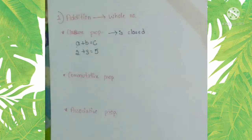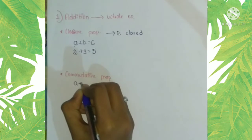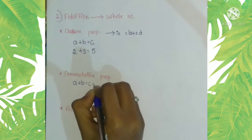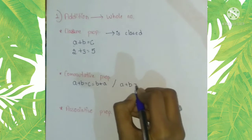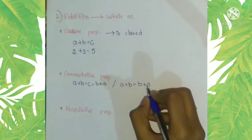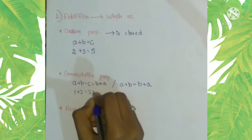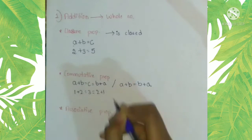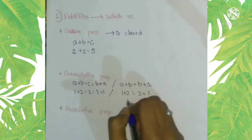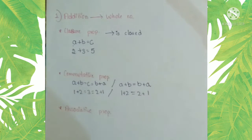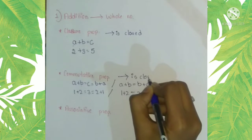The second property is commutative property. The formula is: a plus b equals b plus a. Let us check — instead of a and b we take one plus two, which equals three. Now two plus one also equals three, so the LHS side equals the RHS side. Thus, commutative property is also closed under addition on whole numbers.